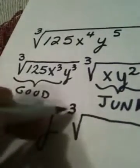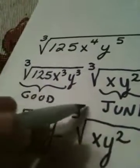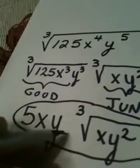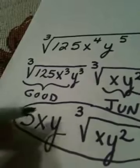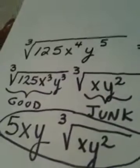And then we have XY squared. And there is my answer. 5XY times the cubed root of XY squared. And we're done.